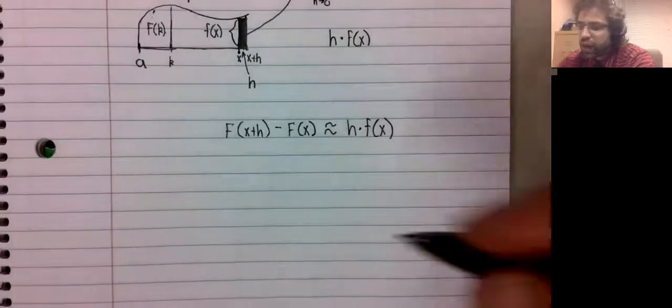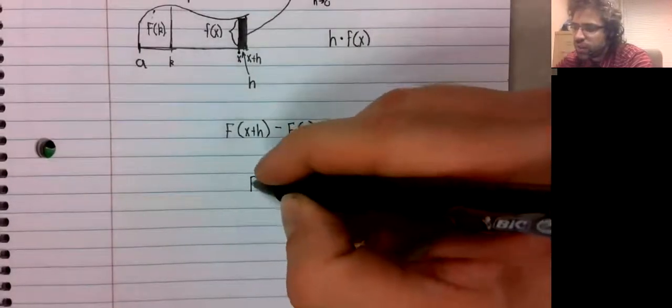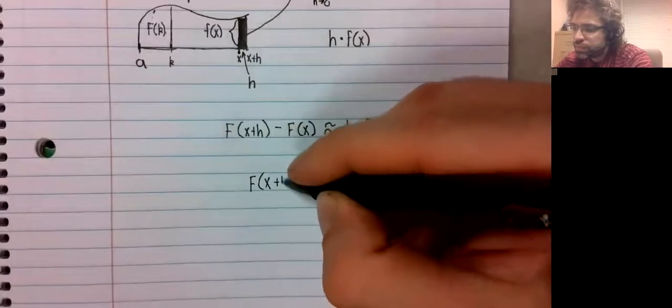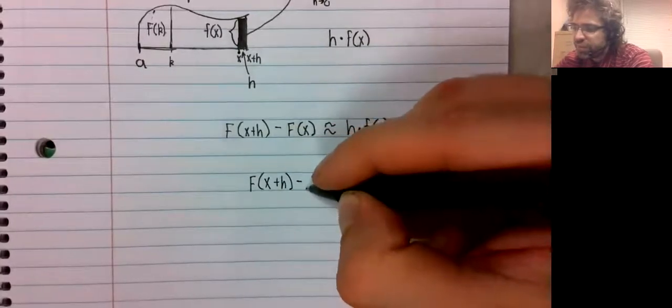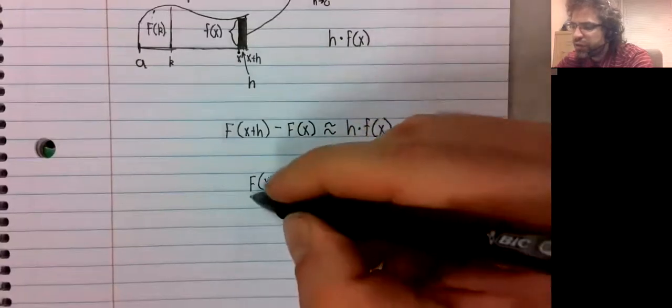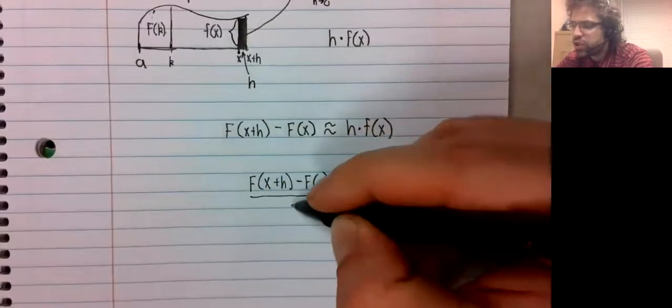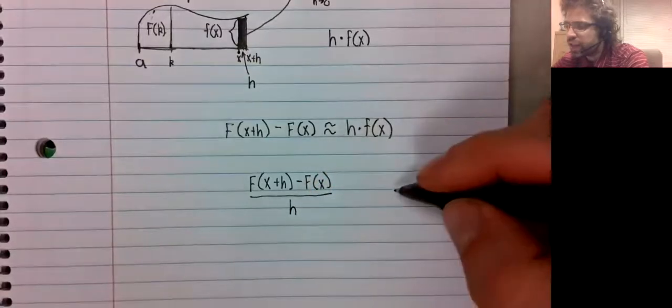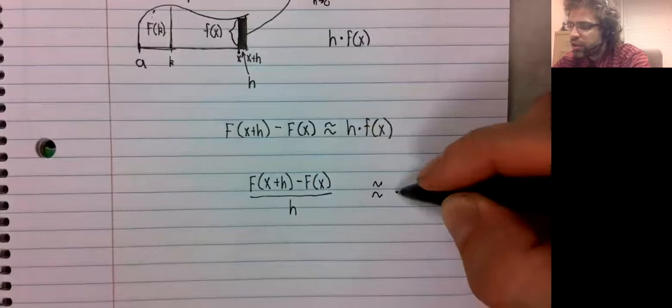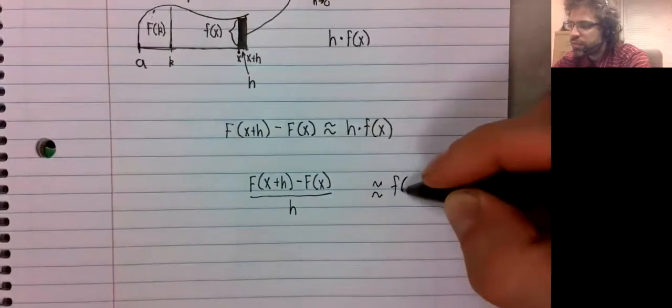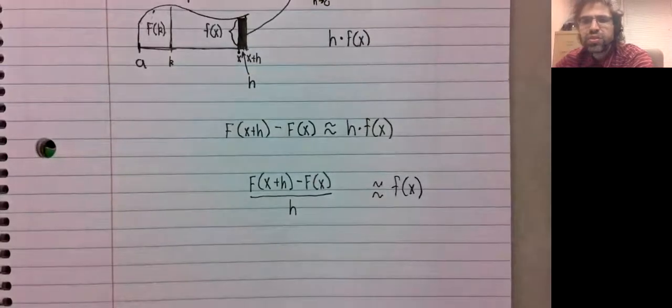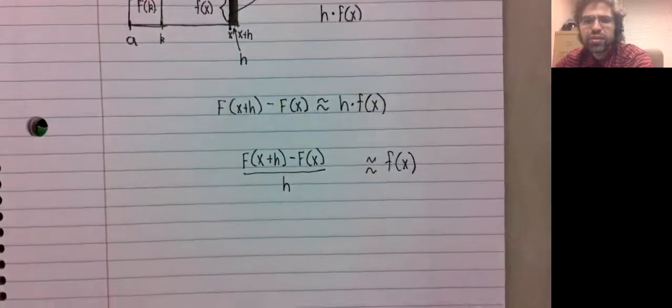And if we divide both sides by h, we get the difference quotient on the left, and on the right, we get f of x.